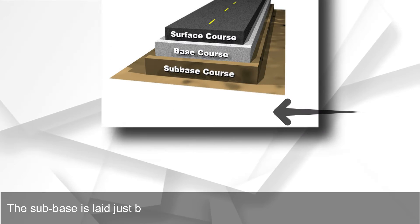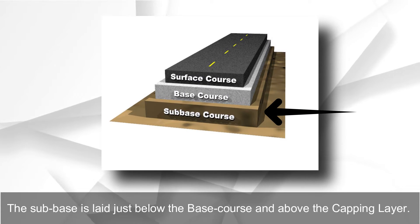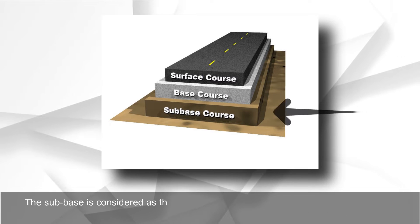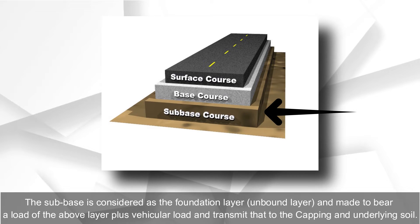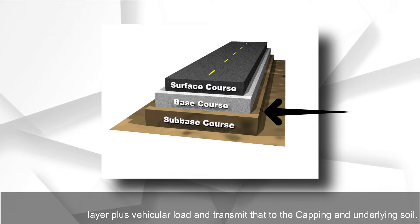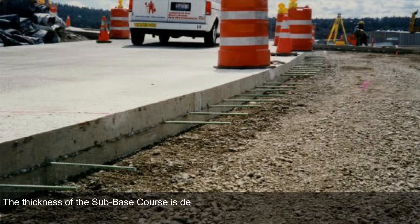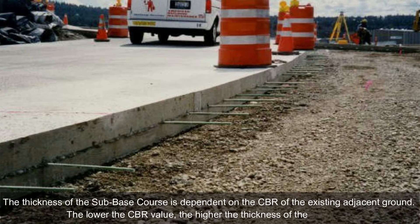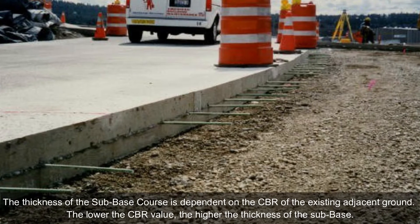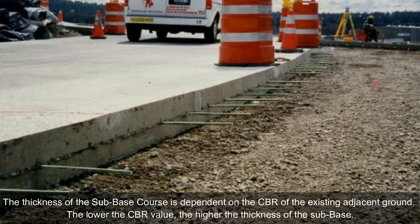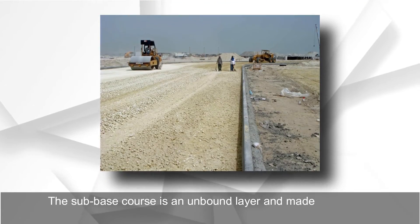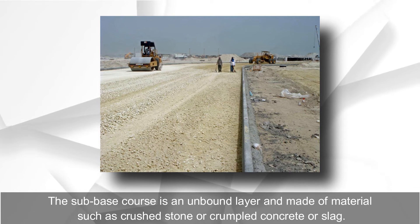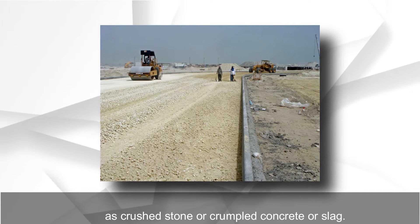The sub-base is laid just below the base course and above the capping layer. It is considered the foundation layer — an unbound layer made to bear the load of the above layers plus vehicular load and transmit that to the capping and underlying soil. The thickness of the sub-base course is dependent on the CBR (California Bearing Ratio) of the existing adjacent ground; the lower the CBR value, the higher the thickness of the sub-base.